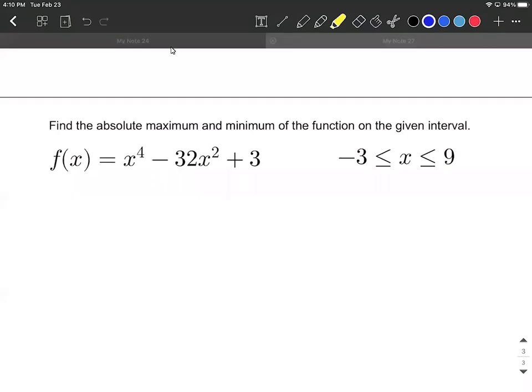In this video, we're going to be calculating the absolute maximum and absolute minimum of this function, f of x equals x to the fourth minus 32x squared plus 3 on this interval from negative 3 to positive 9.